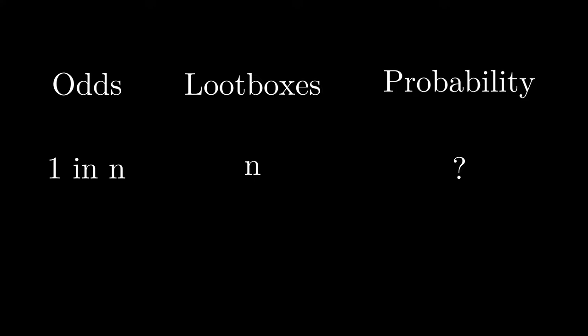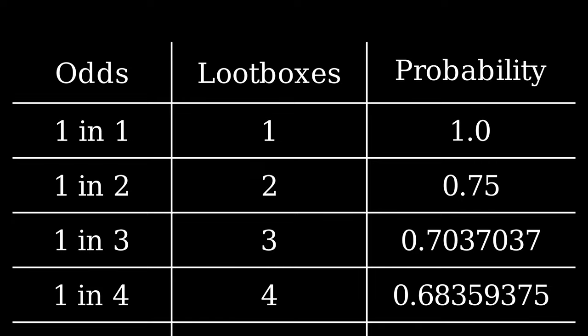The general formula is as such. Take the probability of a failed pull and raise it to the nth power, as we are doing this n times. Then take the complement.